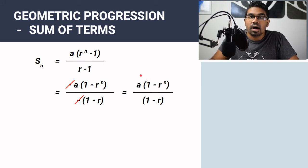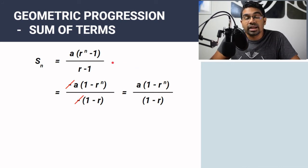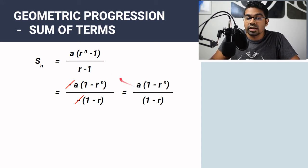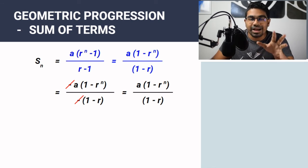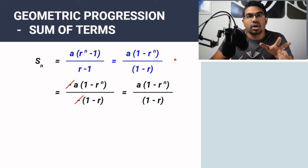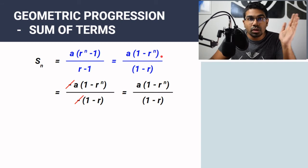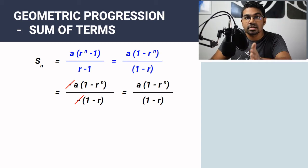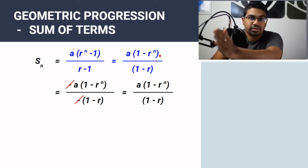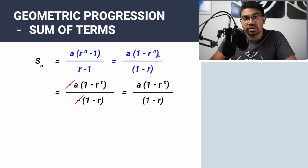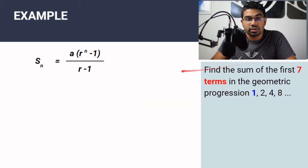So both forms are exactly the same thing. We use one form when R > 1 and the other when R < 1 simply to avoid dealing with negatives in the calculation — you can technically use either for any value of R. It's also important to note that R cannot equal 1; if it did, every term in the sequence would be the same, and it would not be a geometric sequence.